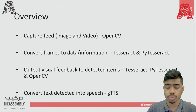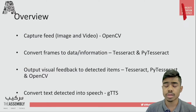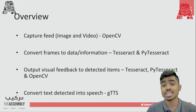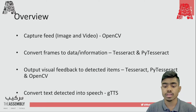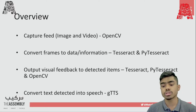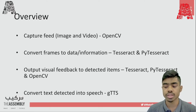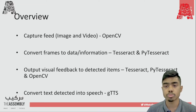Let me give you an overview of today's workshop. This workshop is going to be divided into four steps. The first is capturing the feed — either images or videos — and we use OpenCV for that. Then we convert the image or frames of the video to data using Tesseract and PyTesseract. Finally, we use this information to output visual feedback of the detected items using all three libraries, and then we can convert the detected text into speech using GTTS, or Google Text to Speech.